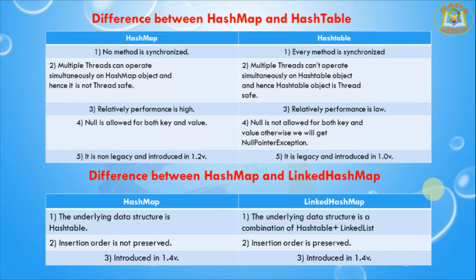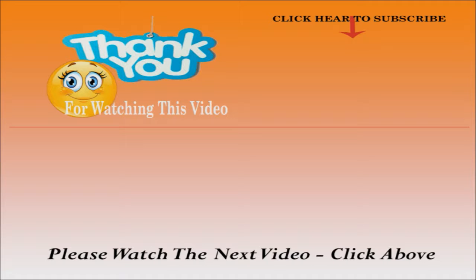In summary: Map is an interface. HashMap and LinkedHashMap are implementation classes of the Map interface. Hashtable is also an implementation class of Map but is a legacy collection. Thank you for watching. I hope this lesson was helpful. Keep watching our lessons, subscribe to Sada Learning Hub, and I will be back soon. Take care, bye bye.